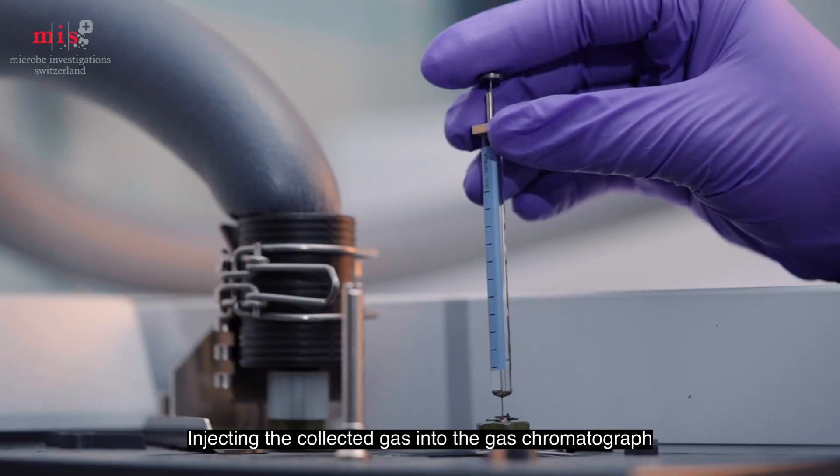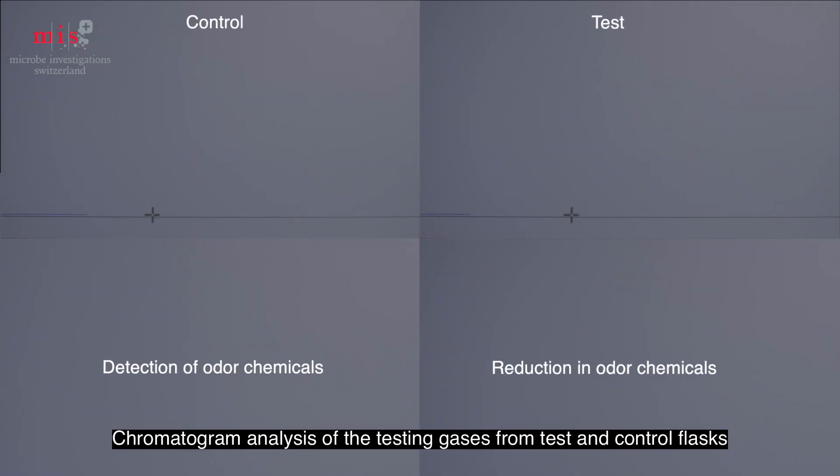The gas collected from conical flasks is injected onto the gas chromatograph. Difference in the peak area of testing gases from samples enables the determination of odor reduction rate.